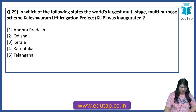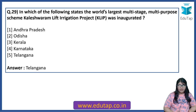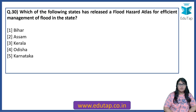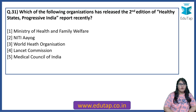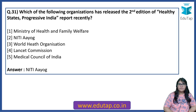In which of the following states was the world's largest multi-stage, multi-purpose scheme, the Kaleshwaram Lift Irrigation Project (KLIP), inaugurated? The answer is Telangana. Which of the following states has released a flood hazard atlas for efficient management of floods? The answer is Odisha. Which of the following organizations has released the second edition of the Healthy States Progressive India Report recently? The answer is NITI Aayog.